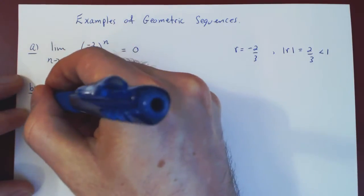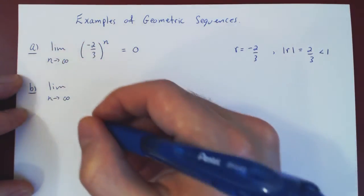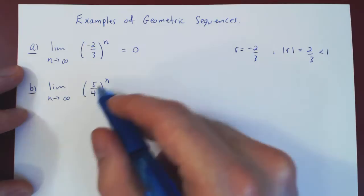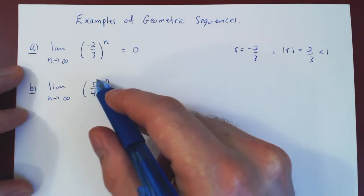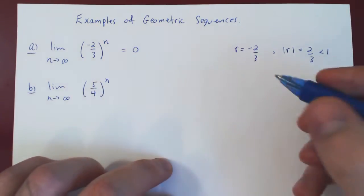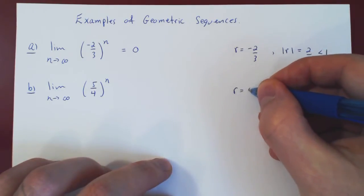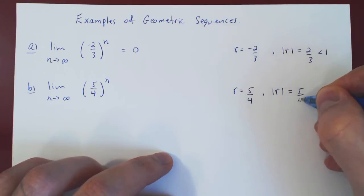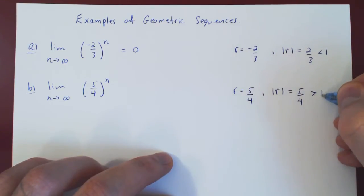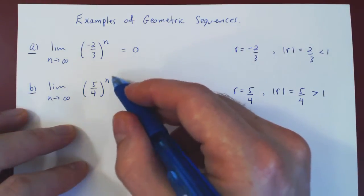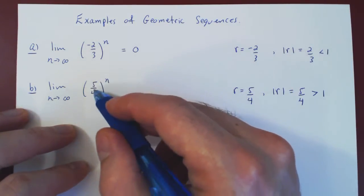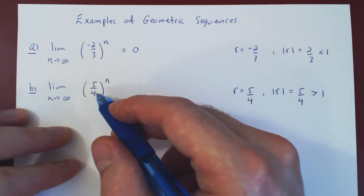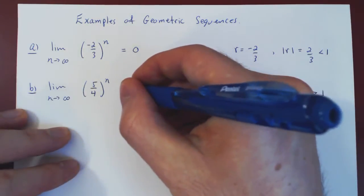Second example: the limit as n goes to infinity of 5 over 4 to the n. Again we're taking larger and larger powers of 5 over 4, which is the value of r. The absolute value of r is 5 quarters, which is strictly larger than 1. So we're taking a larger and larger power of a number greater than 1, meaning it becomes bigger and bigger. So the limit does not exist — specifically, it blows up.